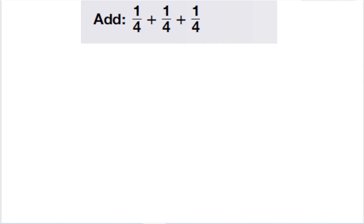So here, my fractions all have a common denominator, or the same denominator. When the denominators are the same, I add up the numerators. So, the denominator stays the same, it stays as a 4, and then I have 1 plus 1 plus 1, which is 3, so 3 fourths.